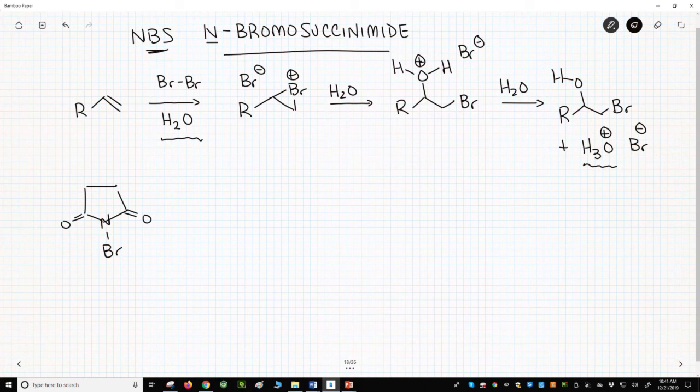Unlike Br2, which is a volatile liquid, NBS is a nice crystalline solid. To understand the reactivity of NBS, let's look closer at Br2 in our top reaction. I tend to think of Br2 as a bromine atom attached to a leaving group, which happens to be another bromine atom. An electron-rich alkene can attack our bromine, and the other bromine is kicked out as a leaving group.